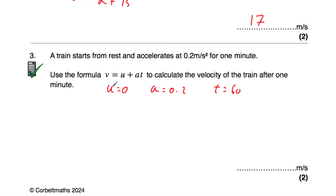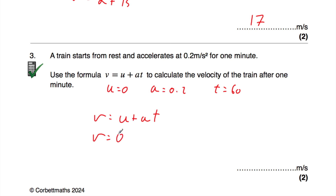So we've got u, we've got a, and we've got t. We've been asked to find the velocity of the train after one minute — the final velocity. So v equals u plus at: v is equal to u, which is 0 because it starts at rest, plus a, which is 0.2, multiplied by t, which is 60.